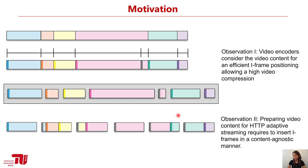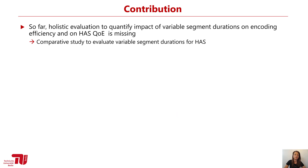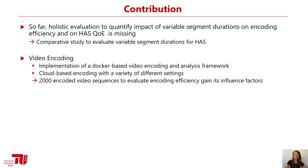While this approach has potential to reduce video bitrate, it is not yet clear to which extent. Furthermore, the implications on adaptive bitrate algorithms are so far unknown. For that reason, we performed a comparative study to evaluate variable segment durations. The study is divided into two major parts. The first is on video encoding, where we implemented a Docker-based framework to automatically encode and analyze videos. In total, our dataset consists of about 2000 video sequences used to evaluate the encoding efficiency gain achievable with variable segment durations.